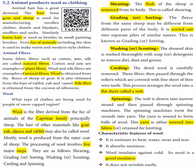Animal fibers. Some fabric fibers such as cotton, jute, and silk are called natural fibers. Cotton and jute are examples of plant fibers.